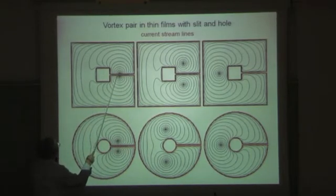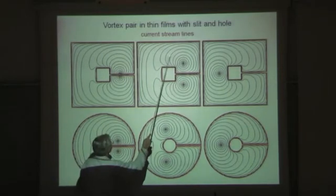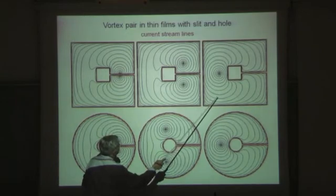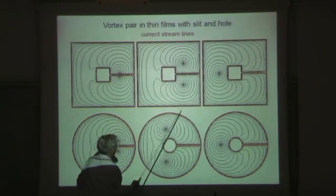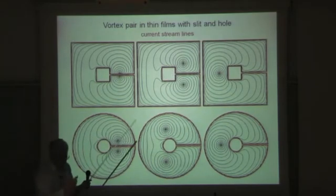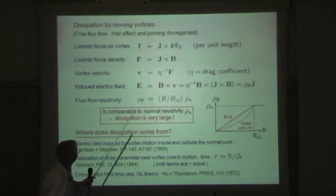This is a situation when you have no applied field, but vortices penetrate here at this point. And then the magnetic field lines of a pair of vortices looks like this. This follows all from this theory.